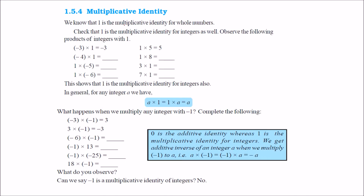Multiplicative identity. Multiplicative identity means — we have seen that 0 is the additive identity, meaning if you add any integer with 0 you get that value back. To get the value back in multiplication, you need some identity value. Minus 3 into 1 — because we want some value which gives you the same result in multiplication, that value can only be 1. So you multiply any value with 1, you will always get the same value. Minus 5 into 1 is minus 5. So, 1 is the multiplicative identity.